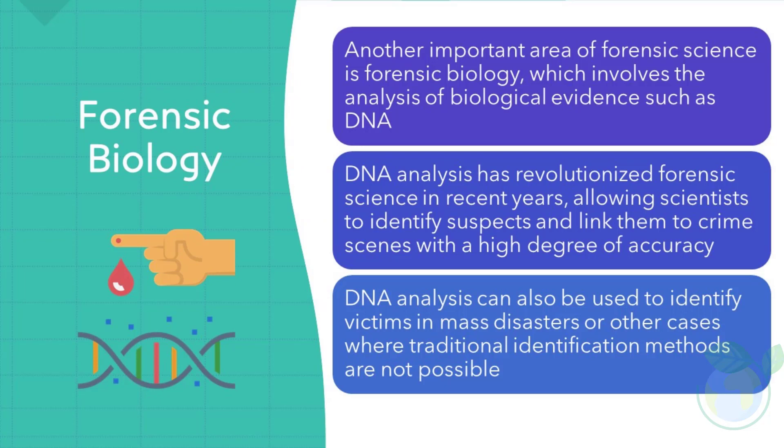Forensic Biology. Another important area of forensic science is forensic biology, which involves the analysis of biological evidence such as DNA. DNA analysis has revolutionized forensic science in recent years, allowing scientists to identify suspects and link them to crime scenes with a high degree of accuracy. DNA analysis can also be used to identify victims in mass disasters or other cases where traditional identification methods are not possible.